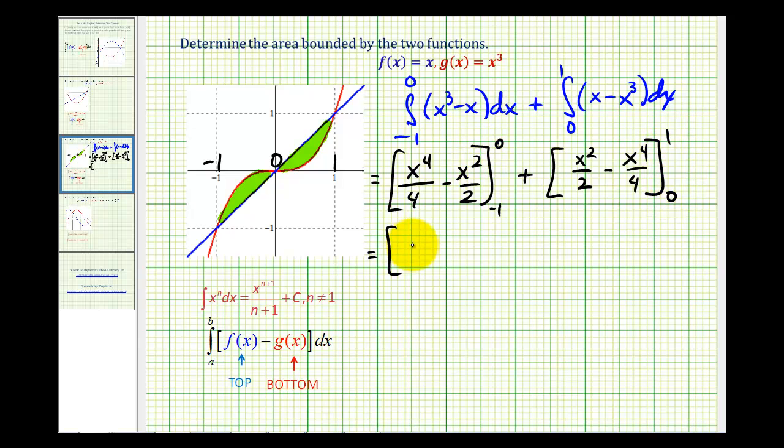So when x is zero, these are both zero. And then when x is negative one, this is going to be positive one-fourth minus one-half. And then over here, when x is one, we'll have one-half minus one-fourth. And then when x is zero, this will be zero again.